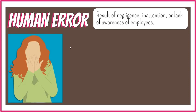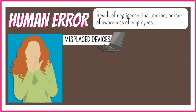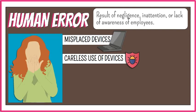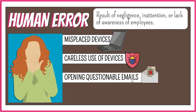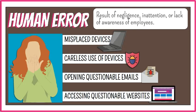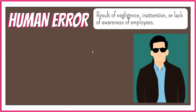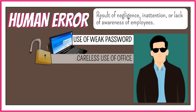Here are some common human errors: misplacing company-provided devices, using them carelessly to the point that malware is introduced, opening emails from someone unknown, or clicking on suspicious links embedded in emails. Accessing questionable websites that can result in malware being introduced into the organization's network, using weak passwords, forgetting to lock desks and filing cabinets, and not logging off the company network.